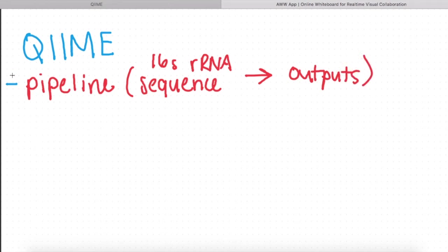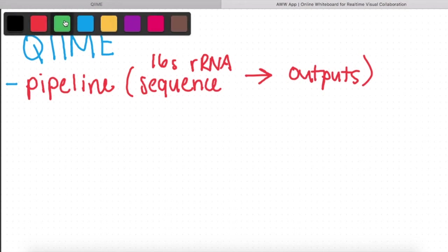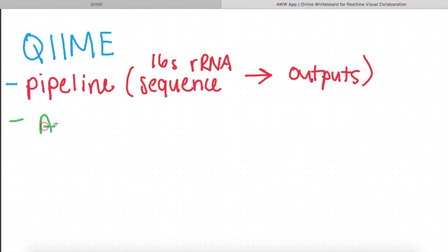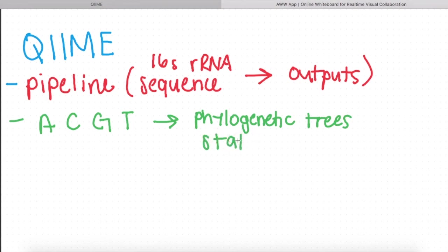So essentially you go from hundreds and thousands of A's, C's, G's, and T's and get a variety of outputs like phylogenetic trees and other statistical information that users can use to help them better analyze their microbial population.